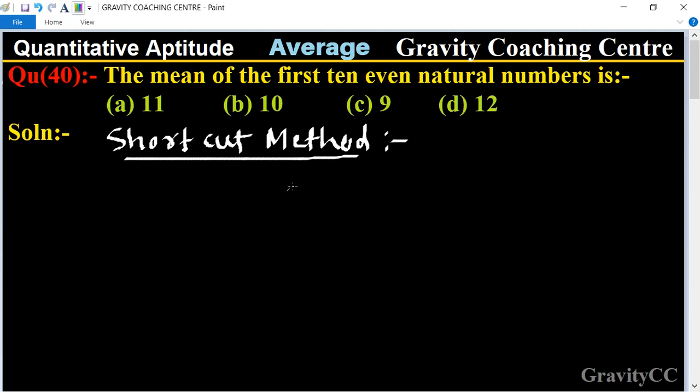First we solve by shortcut method. So the first 10 even natural numbers is the first 2, 4, 6... last one is 20.